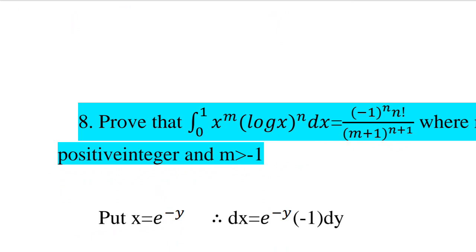For this question, we use the substitution: put x equal to e raised to minus y. Then dx equals e raised to minus y times minus 1 into dy.